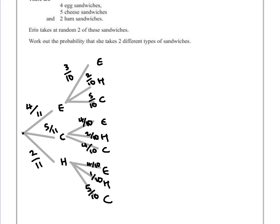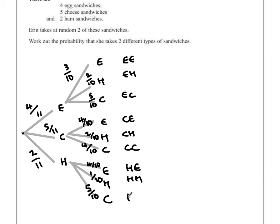Now the only ones we're actually wanting are where she takes two different types of sandwiches. So if we write down what the combinations are, we've got egg and egg, egg and ham, egg and cheese, cheese and egg, cheese and ham, cheese and cheese, ham and egg, ham and ham, and ham and cheese. Looking at the ones that are different, we want those where the letters are different — so we're basically going to be ignoring the ones where everything is the same.